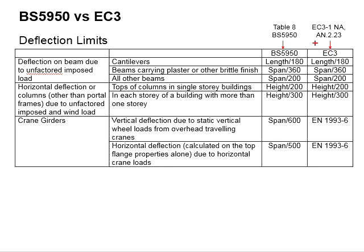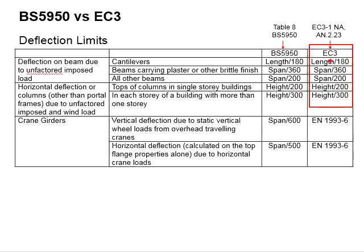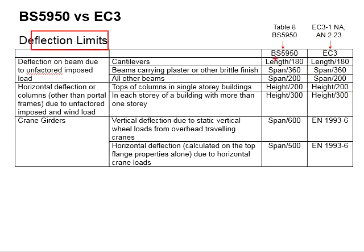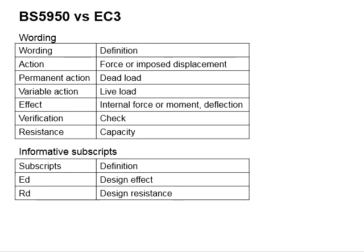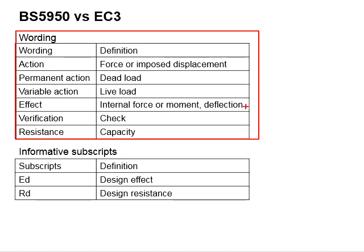Next, regarding deflection limits, Eurocode 3 does not provide explicit guidance on limits for deflection. Such limits can be obtained from the National Annex, while deflection limits are clearly outlined in BS5950 in Table 8. In general, both standards give the same degree of limits, so there is effectively no difference between Eurocode 3 and BS in terms of deflection limits.